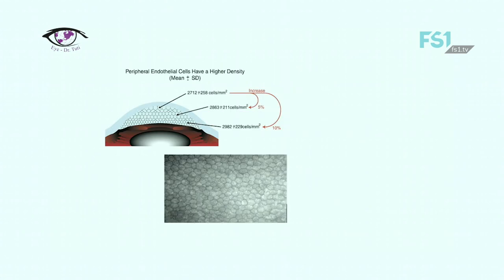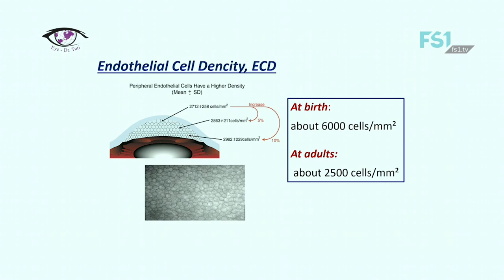Endothelium is a single layer of hexagonal cuboidal cells which are attached to the posterior aspect of Descemet's membrane. These cells are neuroectodermal in origin, and corneal endothelial cell production is relatively fixed. Endothelial cell density is about 6,000 cells per square mm at birth, and later until 11 years the number decreases. The normal range in adulthood is about 2,500 cells per square mm. If cell density falls to 500 cells per square mm, corneal edema develops and corneal transparency is reduced.